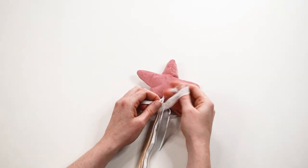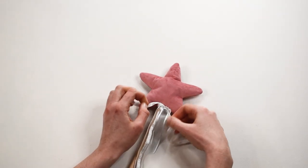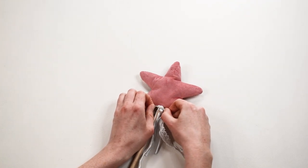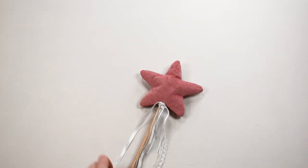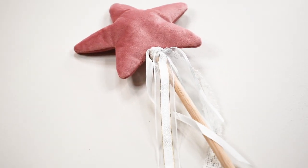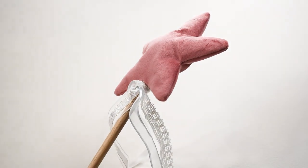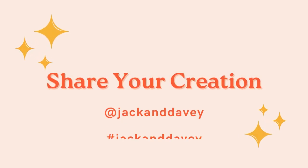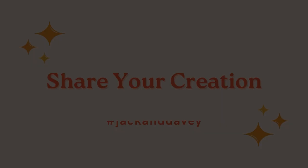If you like, you can tie the ribbon around the dowel or into a bow and you're done. You now have a magic wand for your little one.